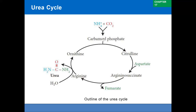Step five: urea formation. In the final reaction, arginine is hydrolyzed by the enzyme arginase to yield urea and ornithine. Ornithine is regenerated in the cytosol and transported back into the mitochondrion for another round of the cycle. The urea is excreted. Because of this cyclic occurrence, these five reactions are known as the urea cycle. The enzyme arginase is mostly found in the liver, which is why urea formation occurs only in the liver.